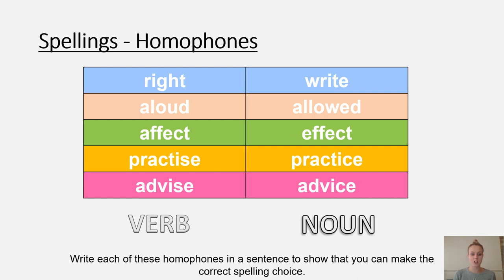In spellings this week we are focusing on homophones, as discussed briefly on Tuesday with 'advice' and 'advise.' Advice is the noun — a thing, place or name — and advise is the verb, a doing word. Please look up the meanings of these words on the PowerPoint if you are unsure on the difference between the two homophones, and then use them in a sentence so I can check you understand the difference.